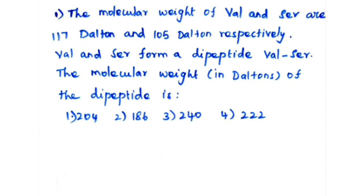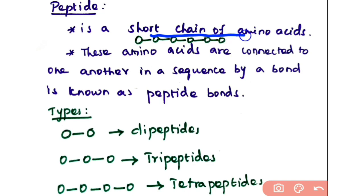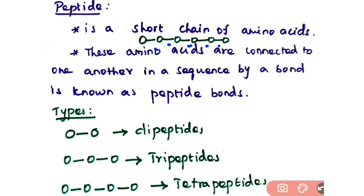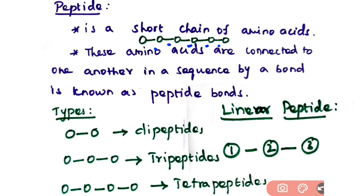In this video we are going to see how to calculate the molecular weight of peptides. First, let's see what peptides are. A peptide is a short chain of amino acids. These amino acids are connected to one another in a sequence by a bond known as a peptide bond, which links all the amino acids in a sequence. A peptide may be in a linear form or in a cyclic form.